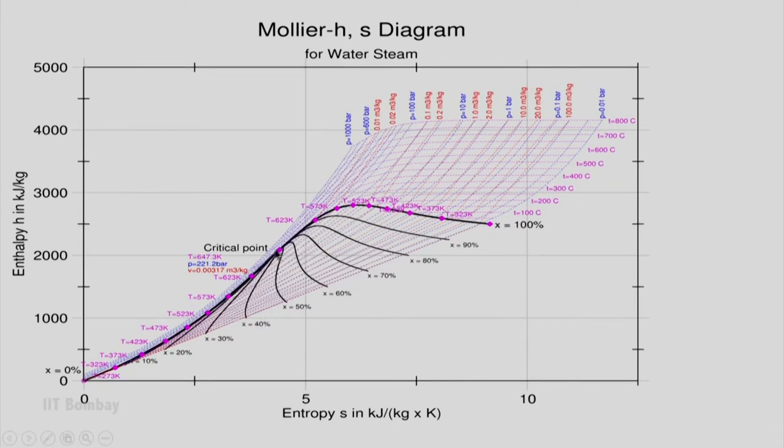What you see are the temperatures which are given in Kelvin over here, while they are also given in degree centigrade over here. We have specific volumes, meter cube per kg, shown in these red lines.